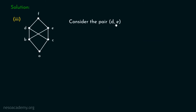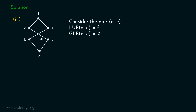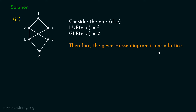Let's consider our third figure. Consider the pair D, E. Least upper bound of D and E is obviously F — they meet at this point. Let's find out the greatest lower bound. Greatest lower bound of D, E does not exist. Why? There are two first meeting points: B and C are both first meeting points of D and E. If we trace the path down, they meet at both B and C. It is clear that the given Hasse diagram is not a lattice.